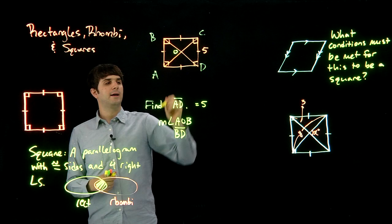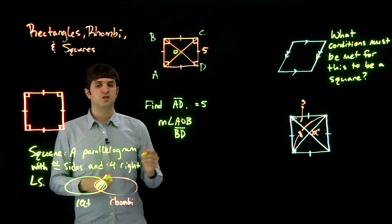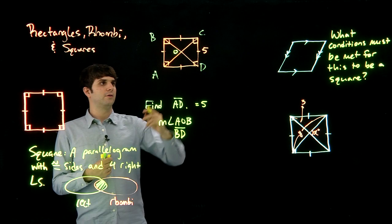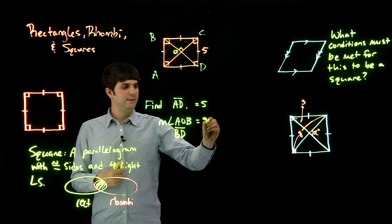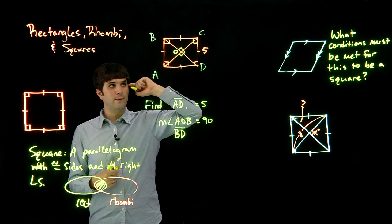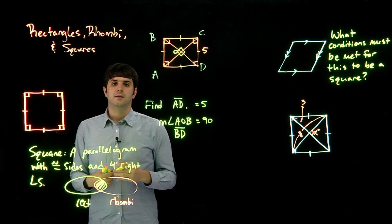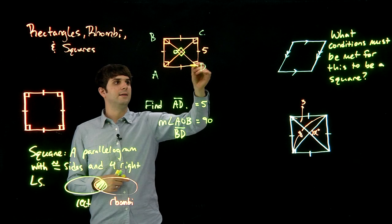That measure of angle AOB. So we're going to find that angle right there where the O is. Well we know because a square is a rhombus, and all rhombi have intersections of their diagonals that meet at right angles, so this is going to equal 90 degrees. So all of these are actually right angles, because a square is a rhombus, and the rhombi's diagonals intersect in 90 degree angles.